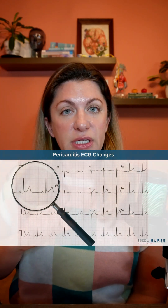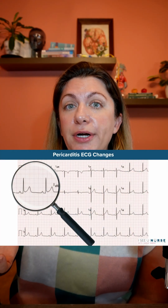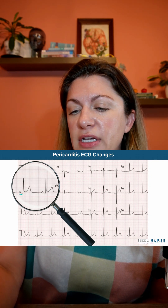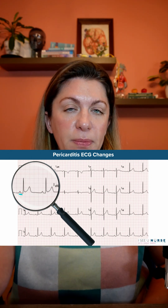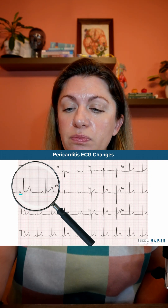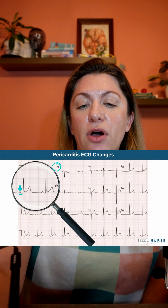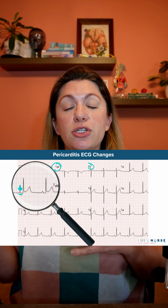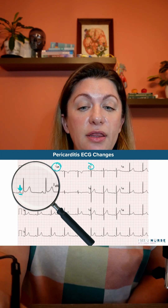Of the ECG changes that you'll see, PR segment depression is one of them, and it's actually pretty specific for pericarditis. Normally the PR segment should be at the isoelectric line, but with pericarditis it's going to be below the isoelectric line — so depression. You will see this in all leads except AVR and V1, where you'll see reciprocal changes, meaning PR segment elevation instead.